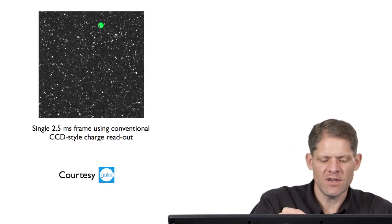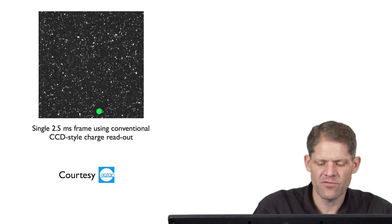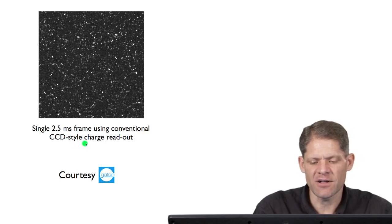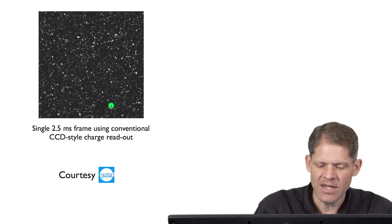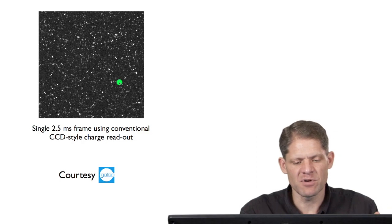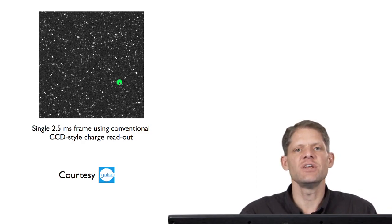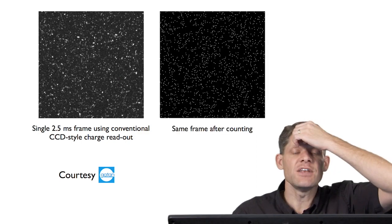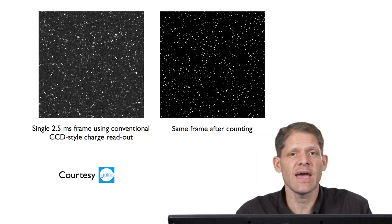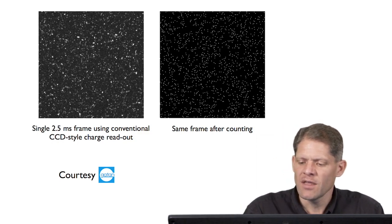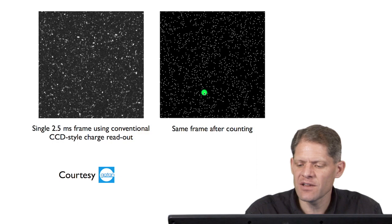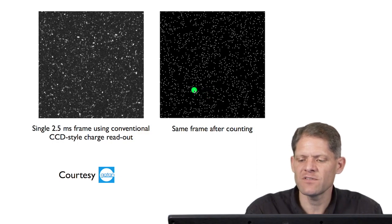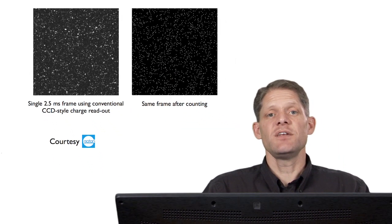This is a single 2.5 millisecond frame that was recorded using a conventional CCD-style charge readout. Each electron hit produces a little burst of different numbers of counts. In a traditional CCD camera, these would all be added up to form the image. A direct detector, at least in its electron counting mode, can interpret each of the bursts as a single hit, so they all have the same weight in the final image.